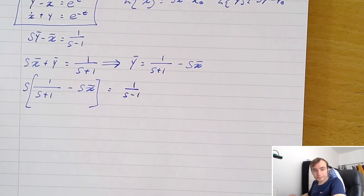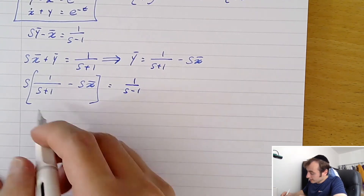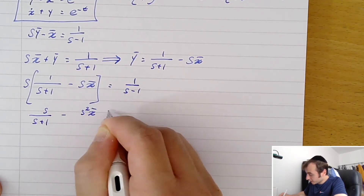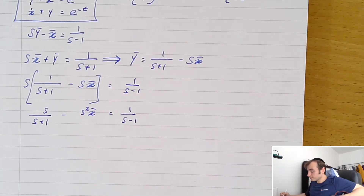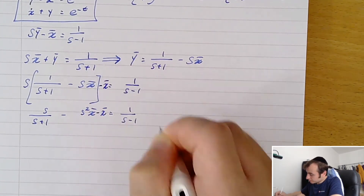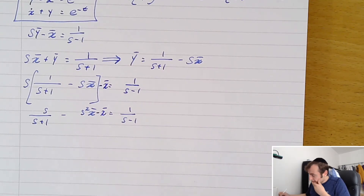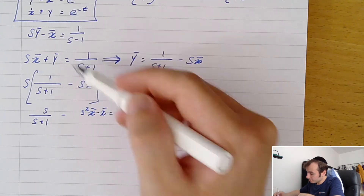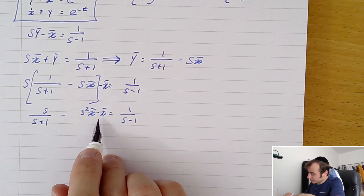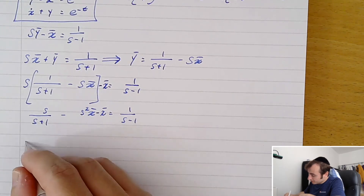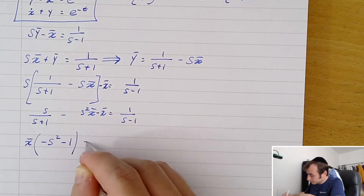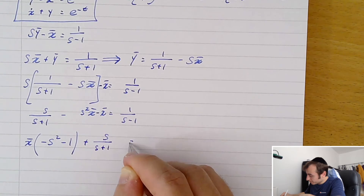Collecting the x-bar terms gives: (−s² − 1)·x-bar plus s/(s+1) equals 1/(s−1). Taking the s/(s+1) to the other side: (−s² − 1)·x-bar equals 1/(s−1) minus s/(s+1). Combining those fractions on the right-hand side, the numerator becomes (s+1) minus s(s−1), which simplifies to s+1 minus s²+s, and ultimately to s²−1 in the denominator... working through gives the combined right-hand side.